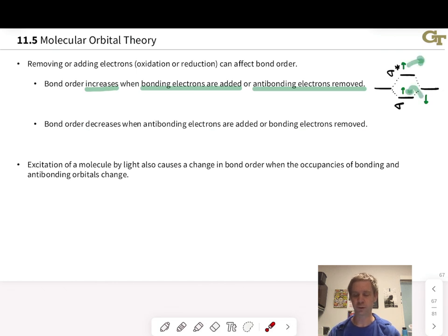Bonding electrons are added or when antibonding electrons are removed. For example, in this situation, bond order would increase if we added an electron into the sigma bonding orbital, but bond order would also increase if we removed an electron from the antibonding orbital, since this decreases the antibonding character within the molecule, removing that antibonding electron.